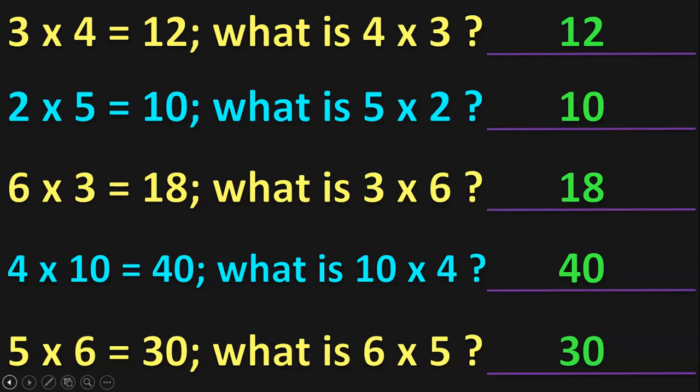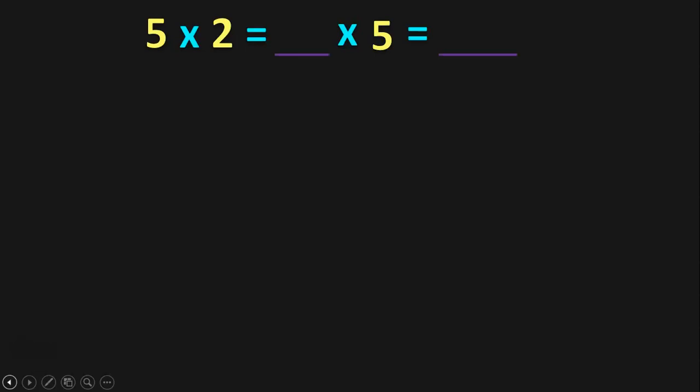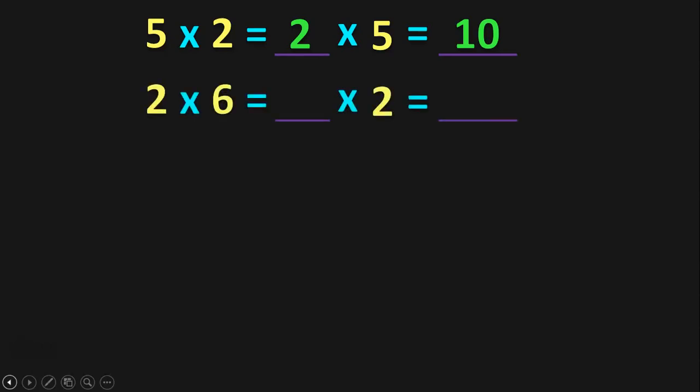It was an interesting exercise, isn't it? Let us do another type of exercise now. 5 into 2 is equal to dash into 5 is equal to another dash. Let us first fill up the first dash. As per the order property of multiplication, 5 into 2 is equal to 2 into 5. And what is 5 into 2 or 2 into 5? The product remains the same — 10. Such interesting activities make the children think. 2 into 6 is equal to dash into 2. The answer is 6 — 2 into 6 or 6 into 2 will give you the same product: 12.